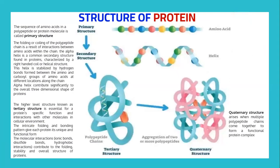Let's look at the diagram. This is the amino acid — the sequence of amino acids in a polypeptide or protein molecule, which is called the primary structure. And this is represented as a helix. The folding or coiling of the polypeptide chain is a result of interaction between amino acids within the chain. The alpha helix is a common secondary structure found in proteins, characterized by a right-handed helical structure, stabilized by hydrogen bonds between amino and carboxylic groups along the chain.